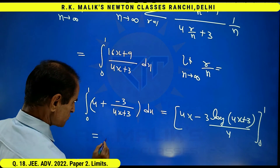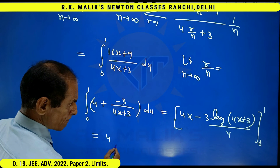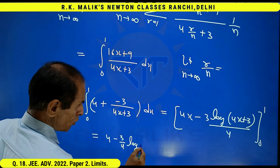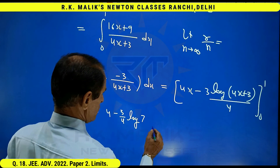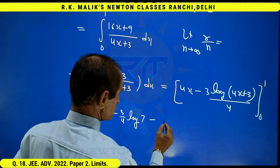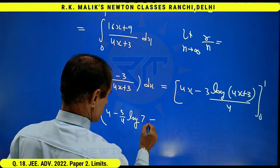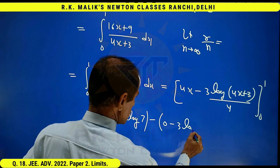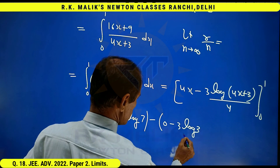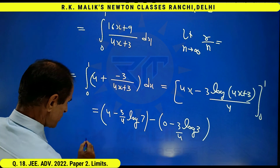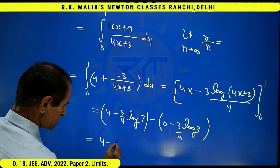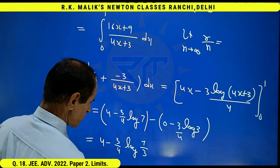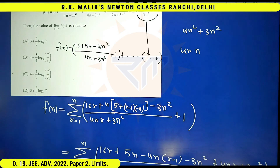Substituting the limits, we get 4 − (3/4)·log 7 minus (0 − (3/4)·log 3), which gives the final answer: 4 − (3/4)·log(7/3). Hence, option C is the correct choice.